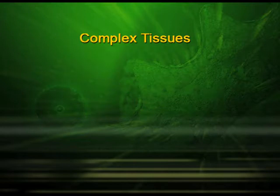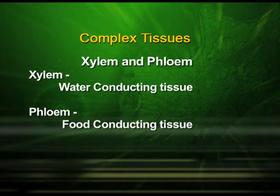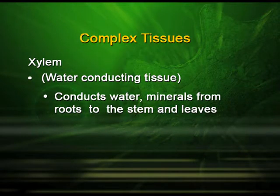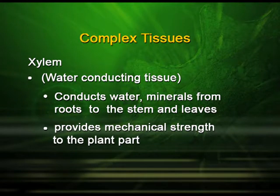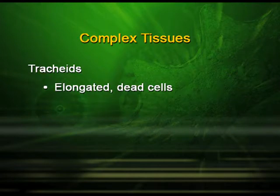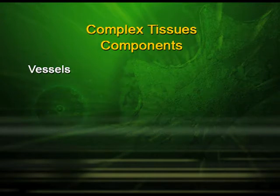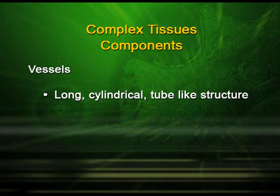The complex tissues are made up of xylem and phloem. Xylem is known as the water-conducting tissue and phloem as the food-conducting tissue. Xylem is responsible for conducting water and minerals from the root to the stem and leaves, and it provides mechanical strength to plant parts. Its components are tracheids, vessels, xylem fiber, and xylem parenchyma. The tracheids are elongated dead cells with thick, lignified walls, tapering ends, and are devoid of protoplasm. The vessels are long, cylindrical, tube-like structures.